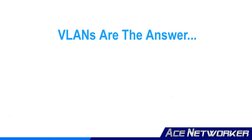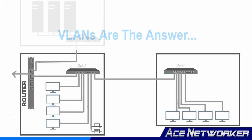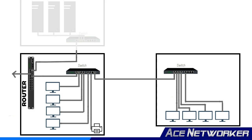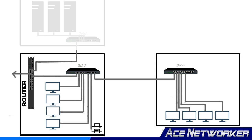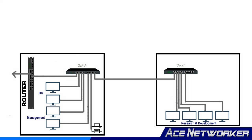Let's look at another scenario to help clarify VLANs. Say you have an organization with multiple buildings, and the employees in each building all need to use the same company network. In the building on the right you have research and development with their lab and records, and in the building on the left you have HR and management. Servers and storage for everyone are in one big data center elsewhere.